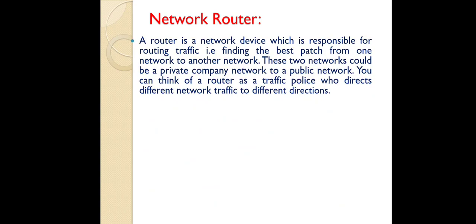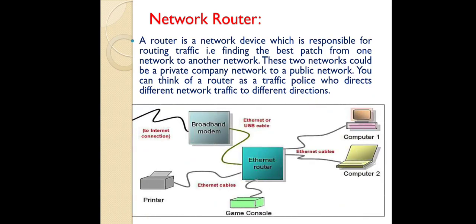The third device is the network router — one of the most important devices in a computer network. A router is a network device responsible for routing, that is, it helps in finding the best path from one network to another network. These two networks could be a private company network to a public network. A network router can be considered as a traffic police who directs different network traffic to different directions.